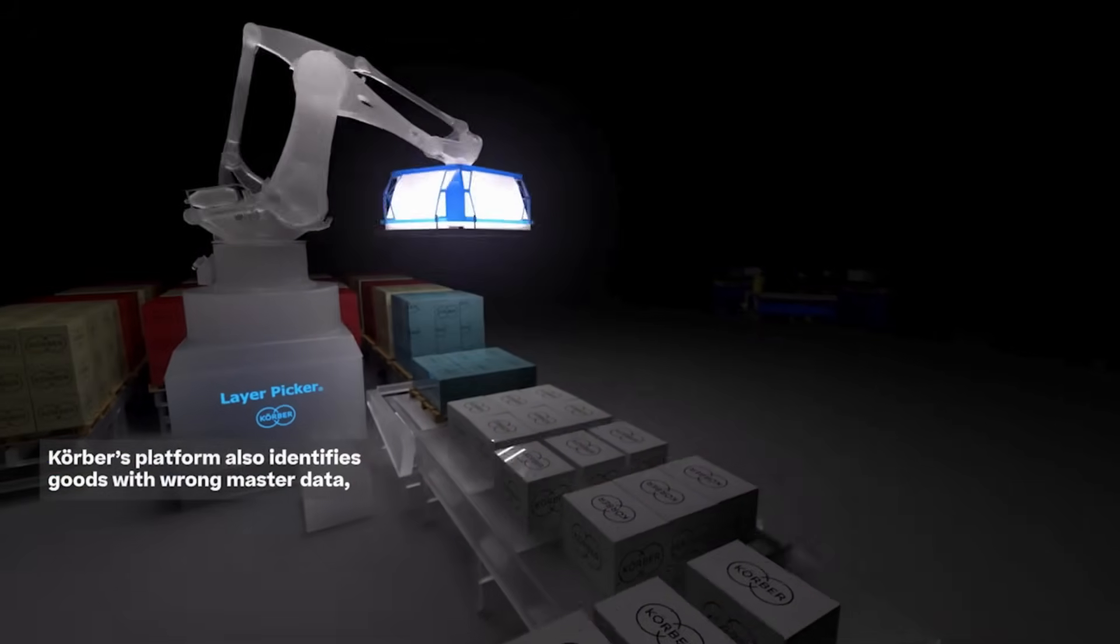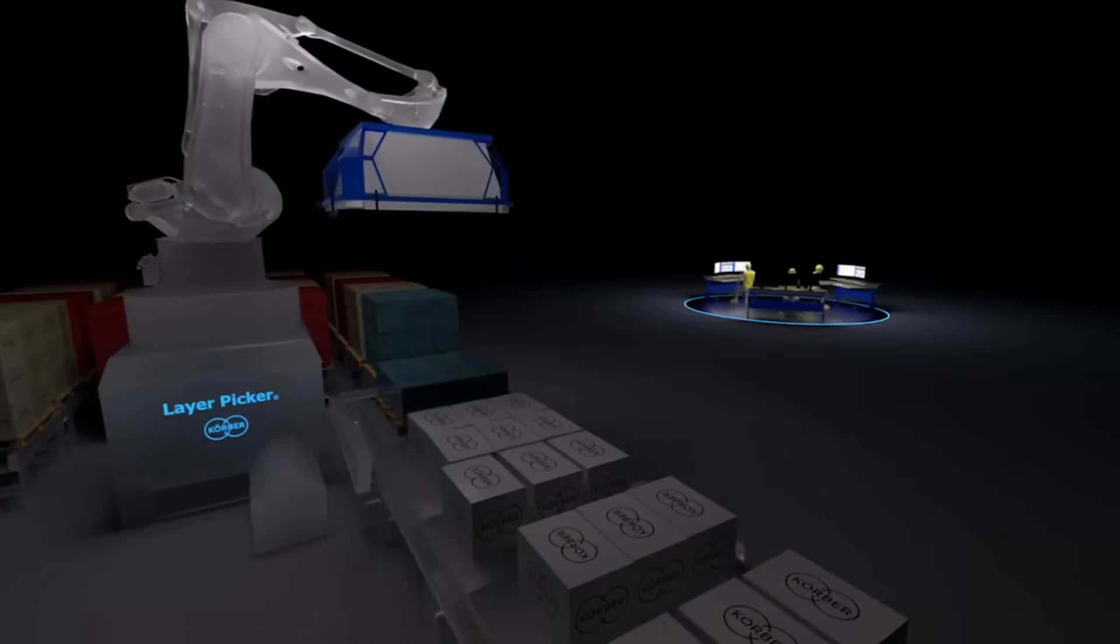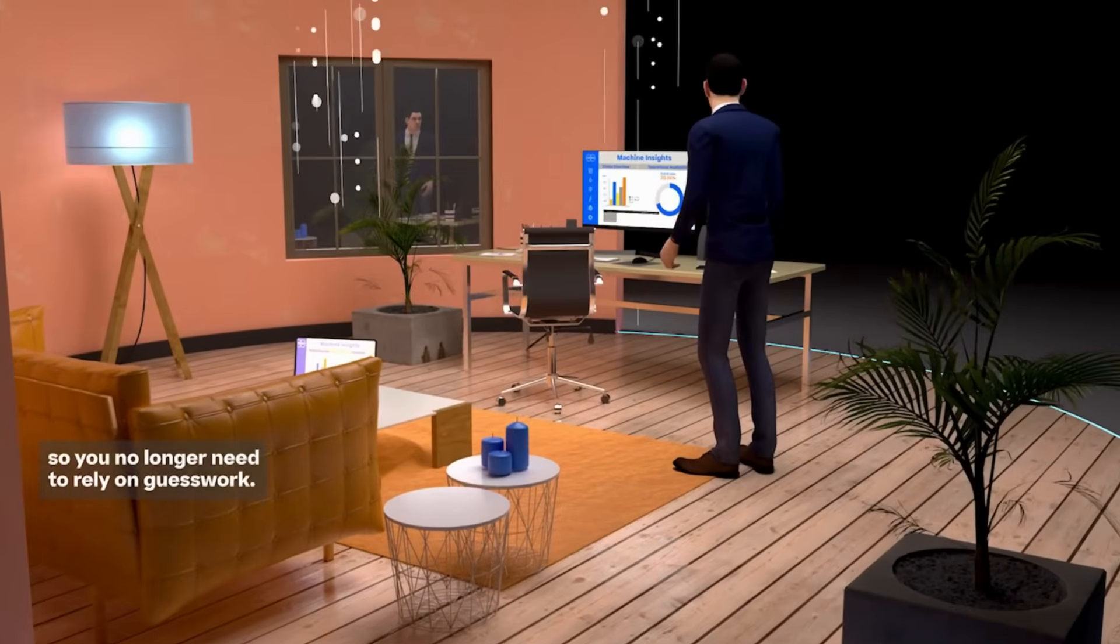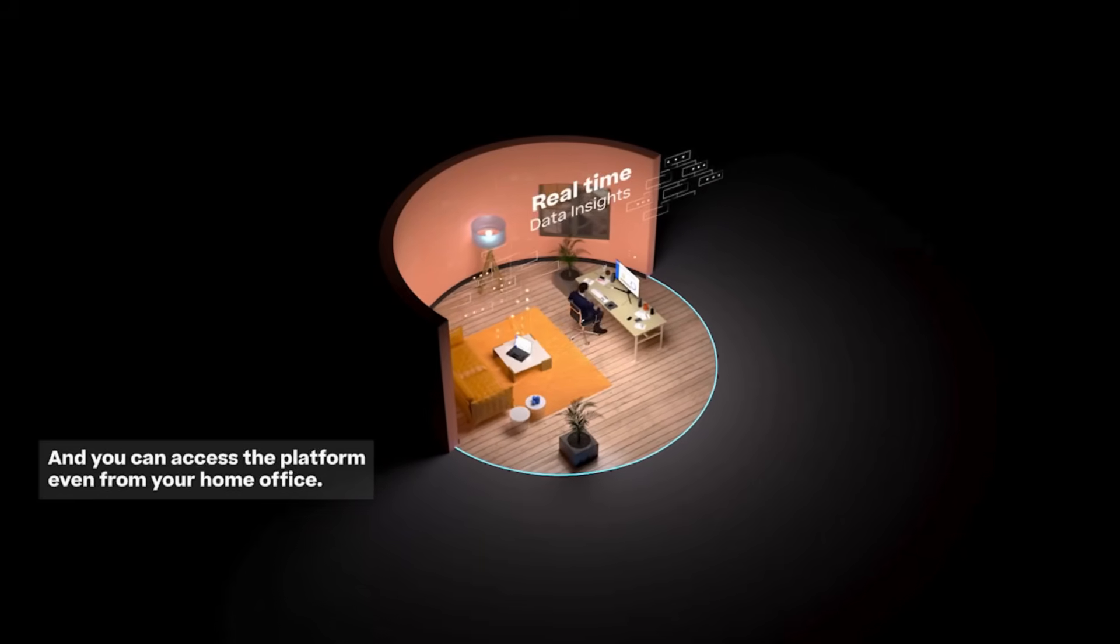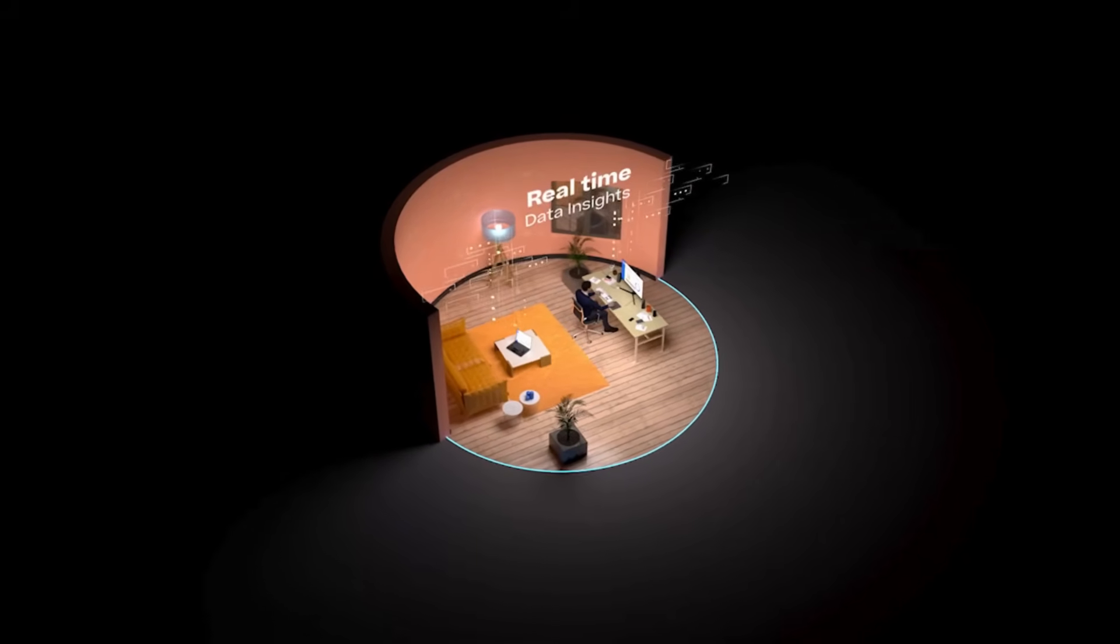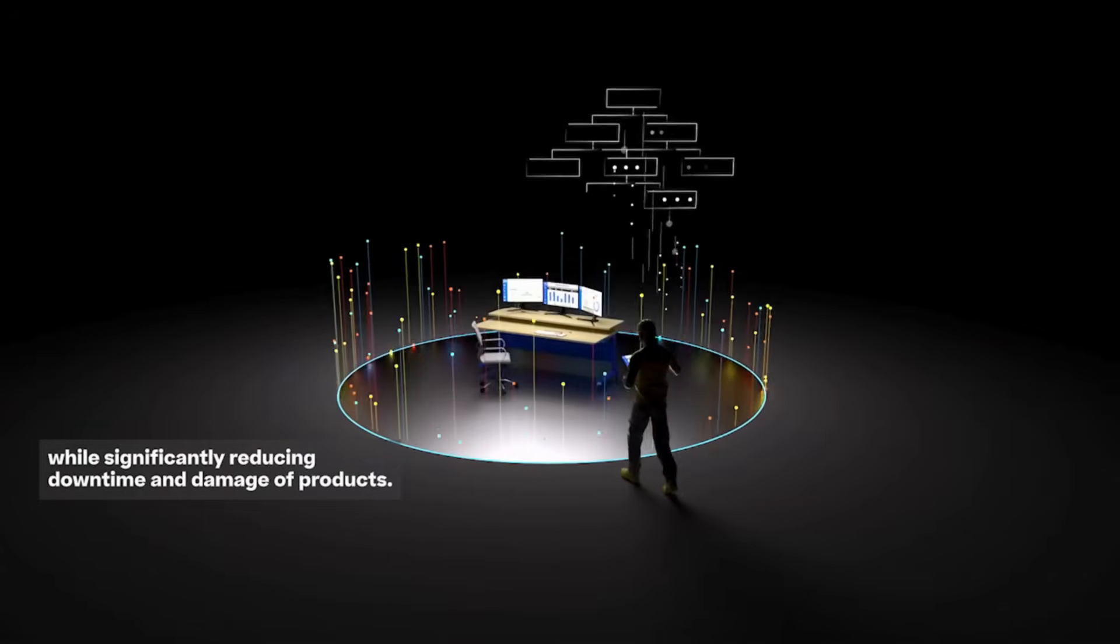Korber's platform also identifies goods with wrong master data, so you no longer need to rely on guesswork. And you can access the platform even from your home office while significantly reducing downtime and damage of products.